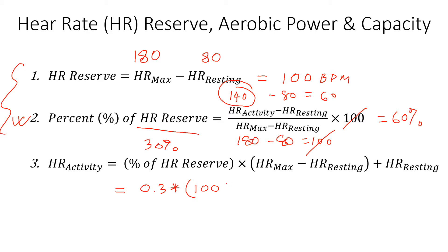Then plus the resting heart rate, which for this person is 80. So we do this calculation and it's 110 beats per minute.